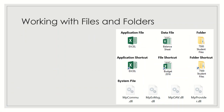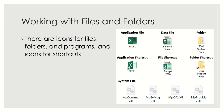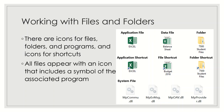Let's move on to working with files and folders. A file is created using a specific program, and the type of program determines what type of file it is. There are different kinds of files on our computer, but they can be categorized into application files, data files, or system files.